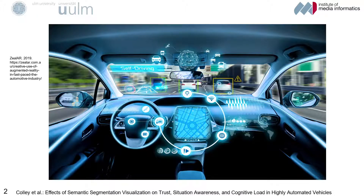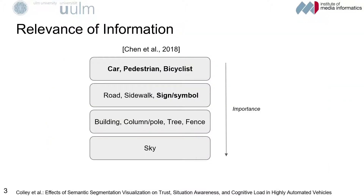Therefore, system transparency was proposed to enable users to adjust their trust levels and to receive more information about system capabilities. It is especially relevant to convey uncertainty to the user in order to calibrate trust. But which information should be displayed and how? The first prerequisite for safe driving is the detection and recognition of relevant objects. According to Chen et al., the most relevant objects are cars, pedestrians, bicyclists, and also static objects such as signposts.